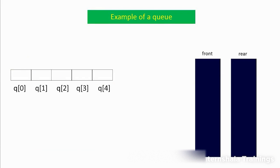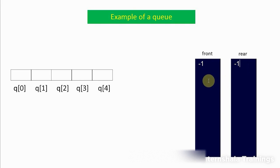There are two ends in a queue: front and rear. Whenever we want to remove an element, it is removed from the front; whenever we want to insert an element, it is inserted at the rear. Here I have an array named 'queue' representing our queue, with elements queue[0] through queue[4]. Initially, the queue is empty, so the value of front is -1 and rear is also -1. A value of -1 indicates the queue is empty, since valid subscripts start from 0.